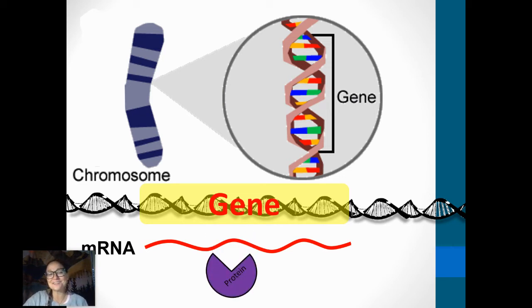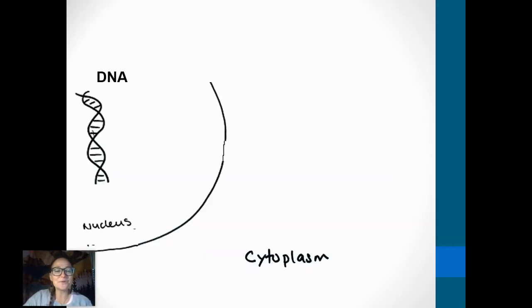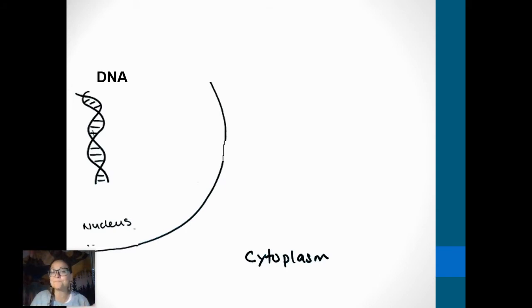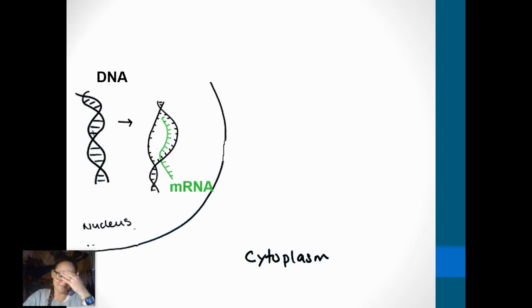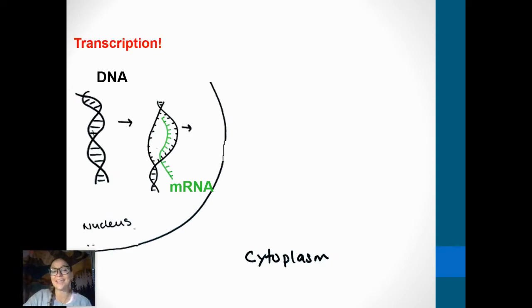The next step where we actually read that code and build the protein is translation. These processes happen in the nucleus and the cytoplasm of eukaryotes. For prokaryotes, they also happen, but since they don't have a nucleus, it's all happening in the cytoplasm. A common mistake I see from students is they say the DNA is turned into RNA — false. The DNA is still there in the nucleus; we're just copying it into RNA. It's like if your friend copies your homework — you still have your original homework, now there's just a copy.